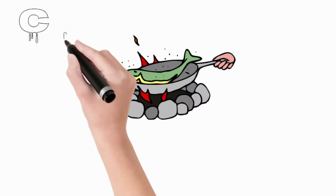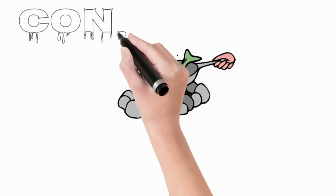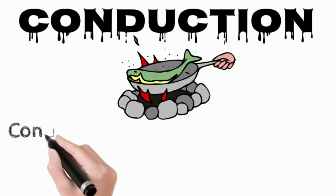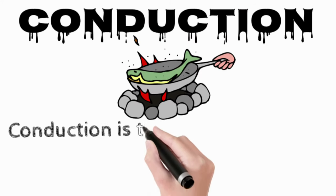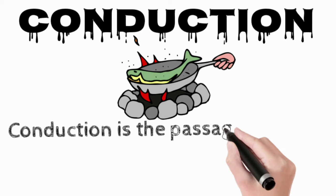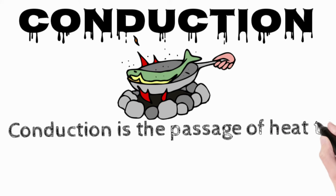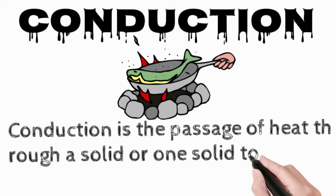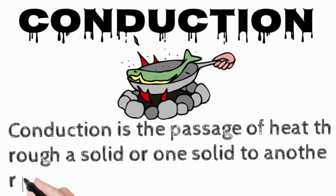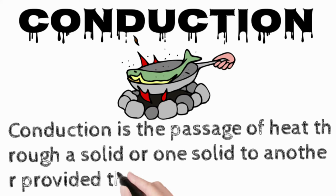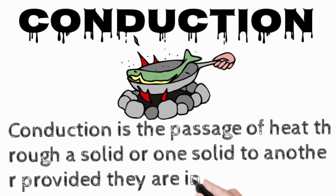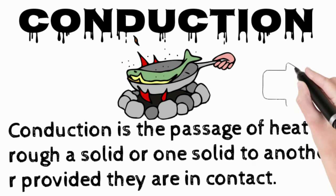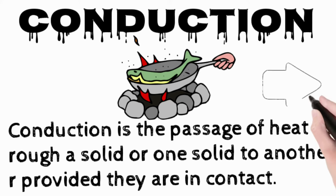Conduction is the passage of heat through a solid, or from one solid to another, provided they are in contact — for example, a pot on a hot plate. Copper heats up very quickly and evenly but does not retain heat well. Stainless steel, iron, and ceramic cookware, on the other hand, retain heat well.